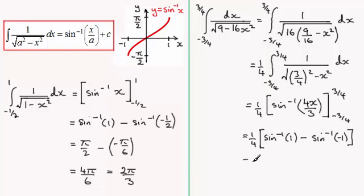And, what does this reduce down to? Well, we've got 1 quarter multiplied with, well, the inverse sign of 1 is going to be pi upon 2. Then, from this, we subtract the inverse sine of minus 1, which is minus pi upon 2.